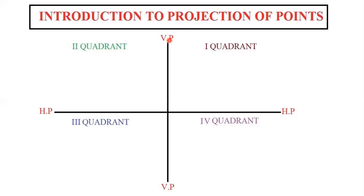Now we are going to keep a point — a point is a one-dimensional entity. So when we keep a point and show a light or see from front view, automatically the image will be falling on the vertical plane. You won't understand the exact concept immediately, so step by step I will be telling — just try to follow it.